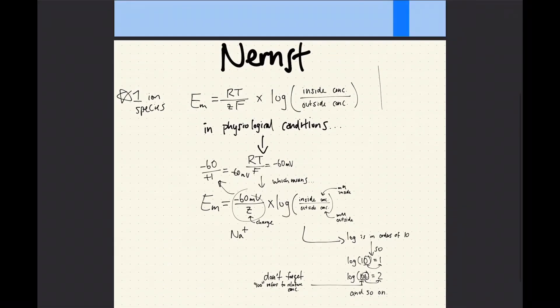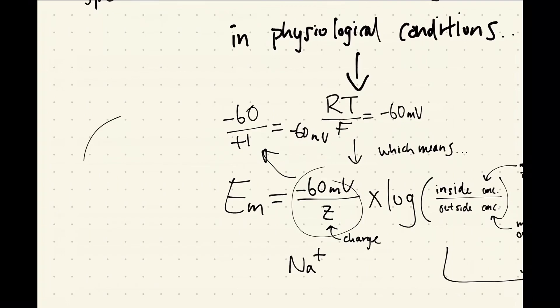When you're looking at the Nernst equation, you're only looking at one channel. So you're only looking at, say, the potassium channel.